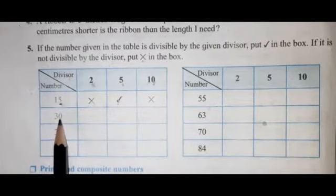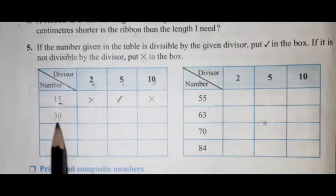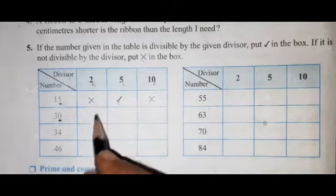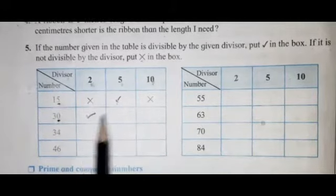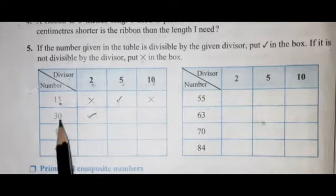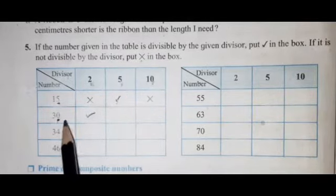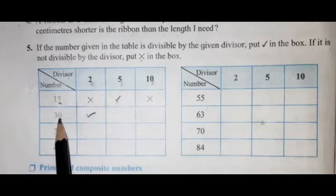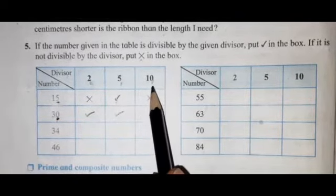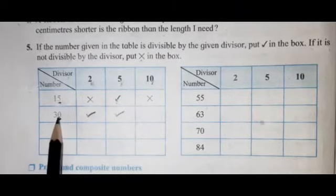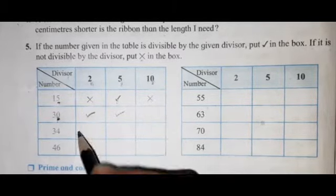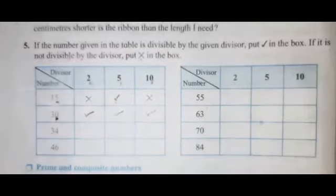Next number is 30. Divisor is 2: the unit place is 0, so 30 is divisible by 2 — put tick. Divisor 5: 30 is divisible by 5 because 0 is at the unit place — put tick. Divisor 10: 0 is at the unit place, so 30 is divisible by 10 — put tick for correct answer.